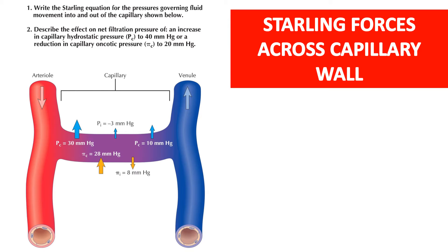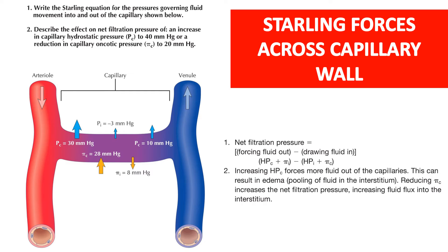Starling forces across the capillary wall: write the Starling equation governing fluid movement into and out of the capillary. Describe the effect on net filtration pressure of an increase in capillary hydrostatic pressure to 40 mmHg or a reduction in capillary oncotic pressure to 20 mmHg. Net filtration pressure equals forces driving fluid out minus forces drawing fluid in. An increase in hydrostatic pressure forces more fluid out of the capillaries, which can result in edema. Pooling of fluid in the interstitium reduces oncotic pressure, increases net filtration pressure, and increases fluid flux into the interstitium.